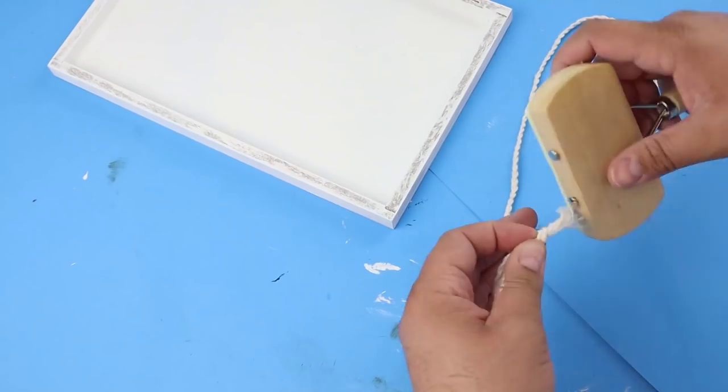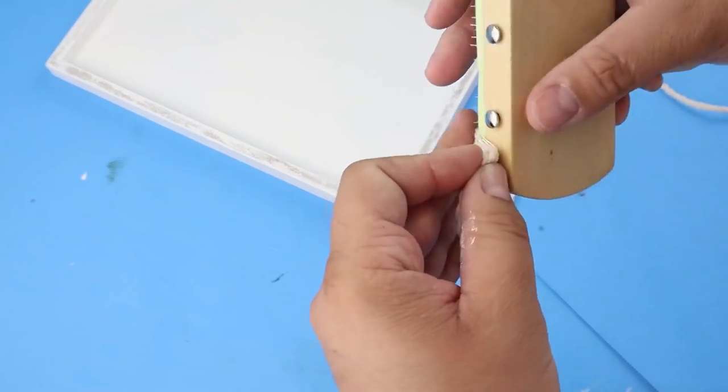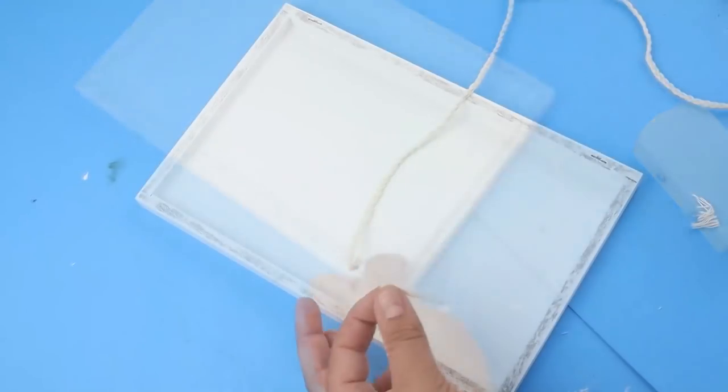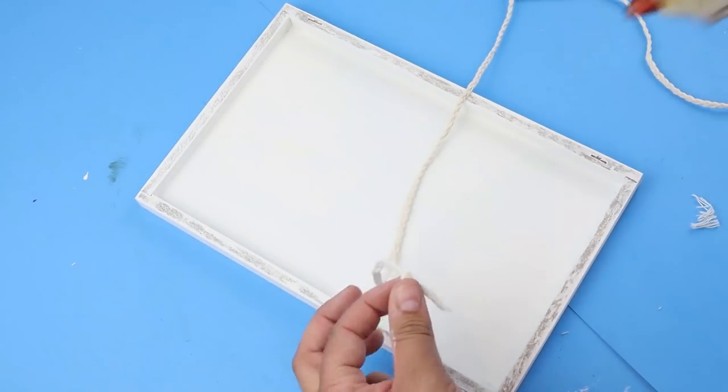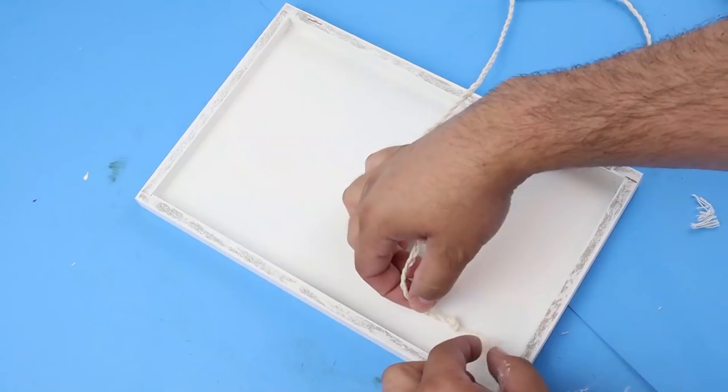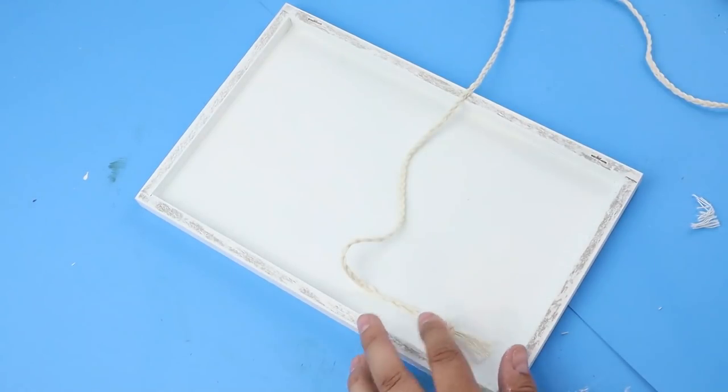And then from there we'll create our rainbow. And of course if we need to trim that, we can go ahead and cut that off. Now the next part here is gluing our actual braided string down.